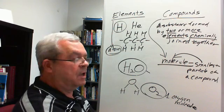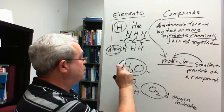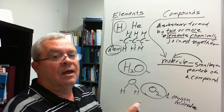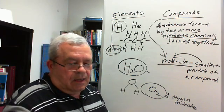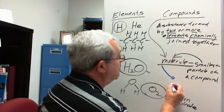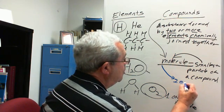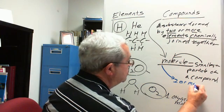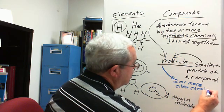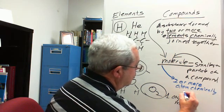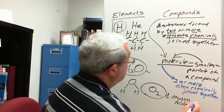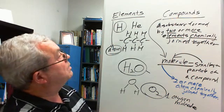Just as H₂O represents one water molecule, O₂ represents one oxygen molecule. To generalize our definition: a molecule is when you have two or more atoms chemically joined together — meaning there is a chemical bond between them.